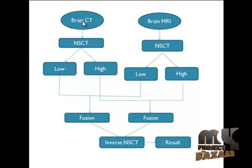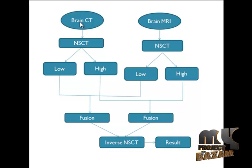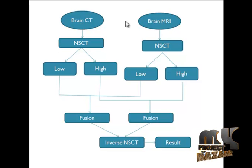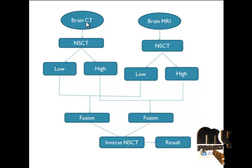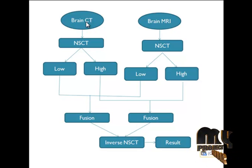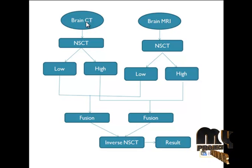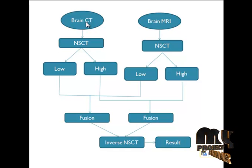The flow of our process starts by giving two images as input: the first is the brain CT image and the second is the brain MRI image. These two images are initially taken and passed to the pre-processing step, where we remove noise using a Wiener filter, which is a windowed linear filter.